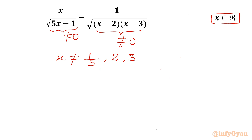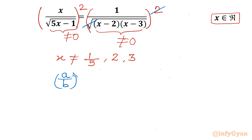Now I will consider squaring both sides. So I will write power 2 on this side, and on the other side also I will consider power 2. I can cancel the square and square root, and on the left hand side I will use the property (a over b) to the power n equals a^n over b^n. So it will become x squared divided by (square root of 5x minus 1) whole squared.